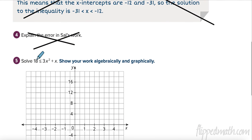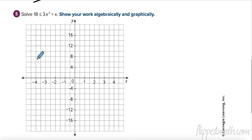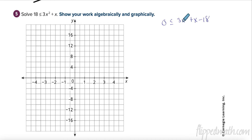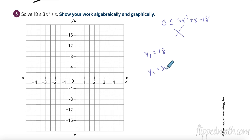On page 324, here's one thing you cannot do: if we subtract 18 and get 0 ≤ 3x² + x − 18, this is not factorable. So I have to put this into my calculator. I can do y1 = 18 and y2 = 3x² + x, then see it that way. Go ahead and pause the video and put that into y1 and y2.